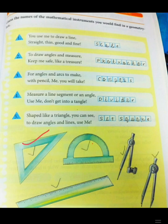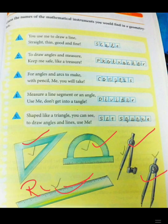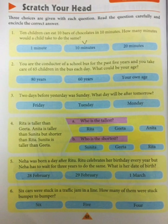So students, here are all the instruments: set square, protractor, compass, divider, and scale. There is one more name for scale — that is ruler. Remember, we also call ruler for the scale. Now let's move to the next page, page number 48.